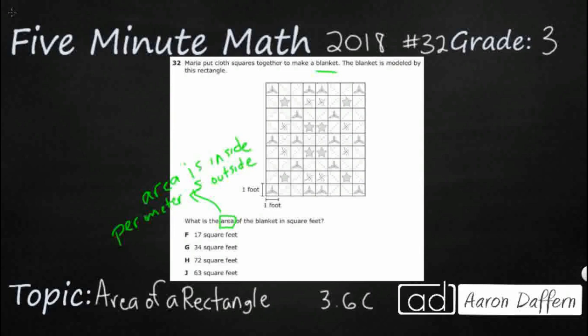Well, the only way to measure the inside is to put squares. In this case, it's a real blanket, so we have real squares. But sometimes if it's just a regular shape, we'll put make-believe squares in there and just count the number of squares.